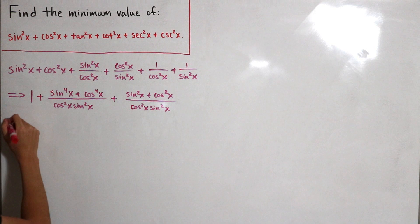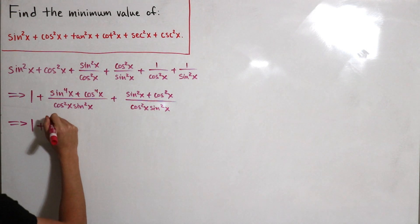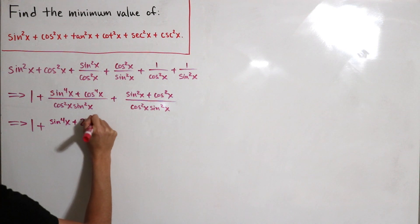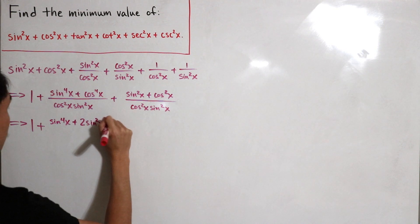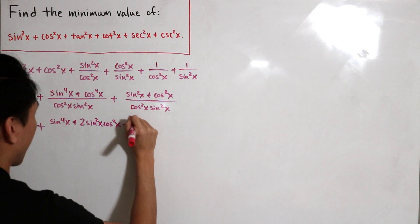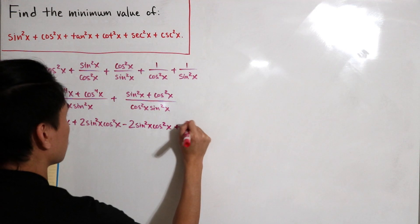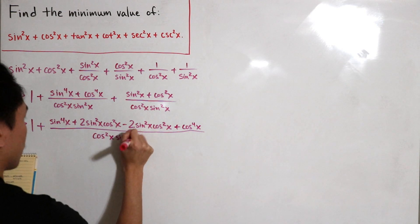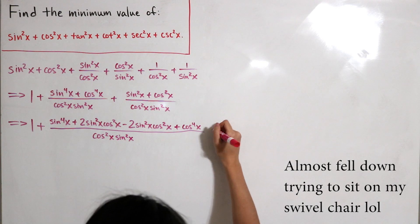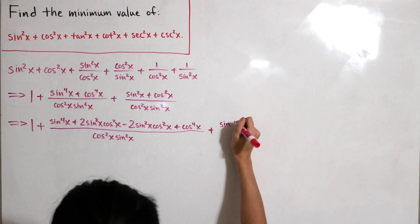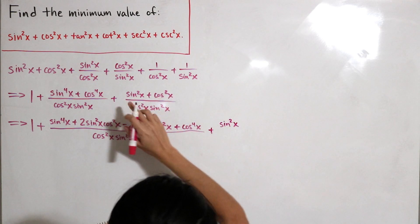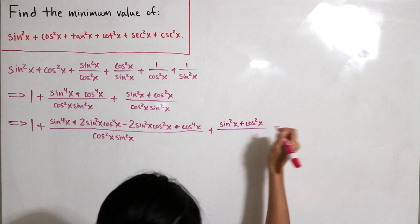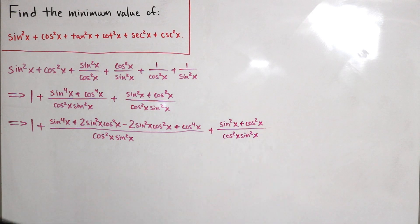Now let's fix the middle term. I'm going to add and subtract two sine squared of x multiplied by cosine squared of x. So we keep sine to the fourth of x, then add and subtract two sine squared of x times cosine squared of x, and add cosine to the fourth of x, all divided by cosine squared of x times sine squared of x. We keep the second fraction the same for now — sine squared of x plus cosine squared of x over the same denominator.